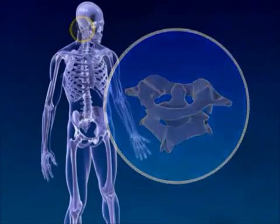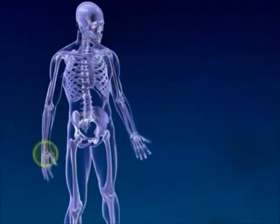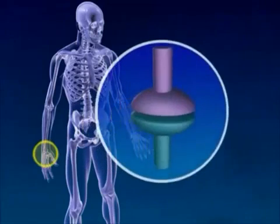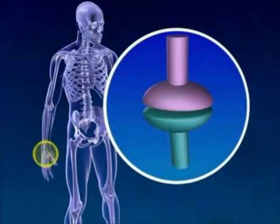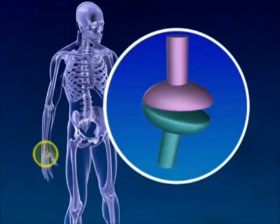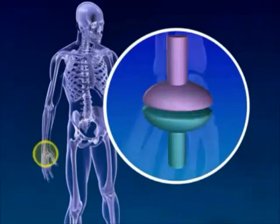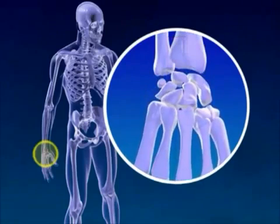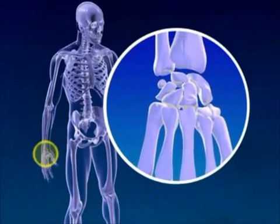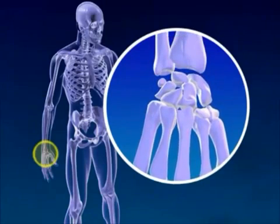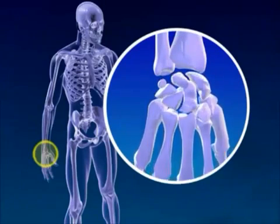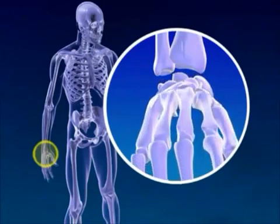Next is the saddle joint. It has many articular faces that resemble saddles. Each is concave on one axis and convex on the other, and these opposites face each other. It is considered biaxial, and examples are the thumb, carpals, and metacarpals.